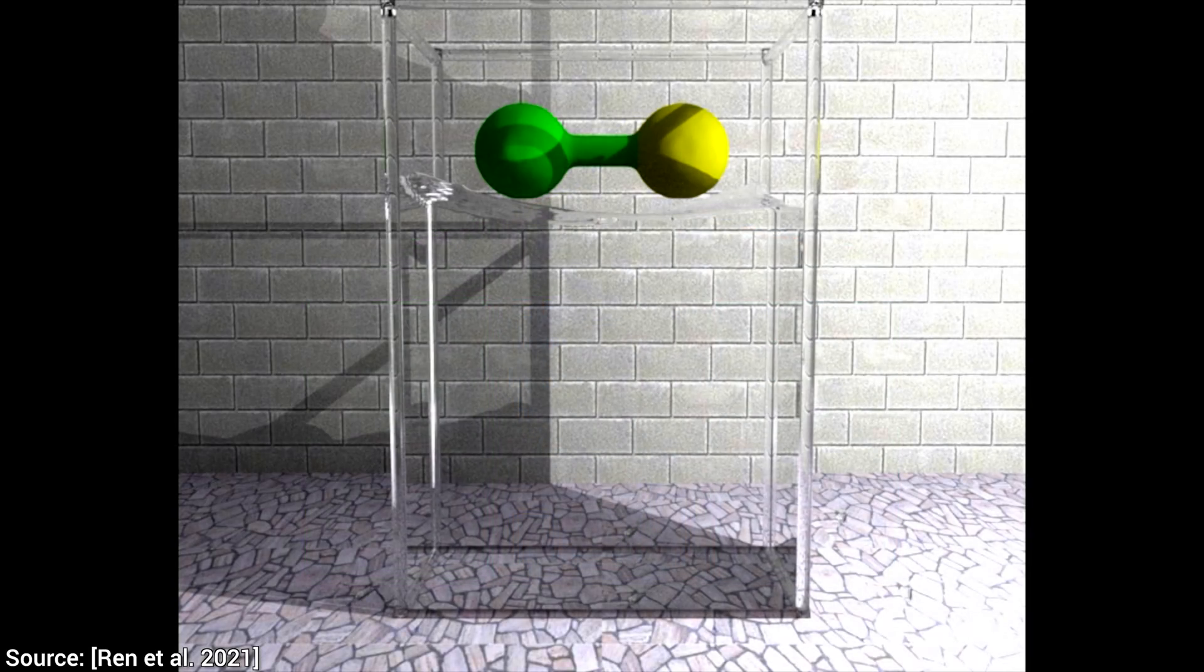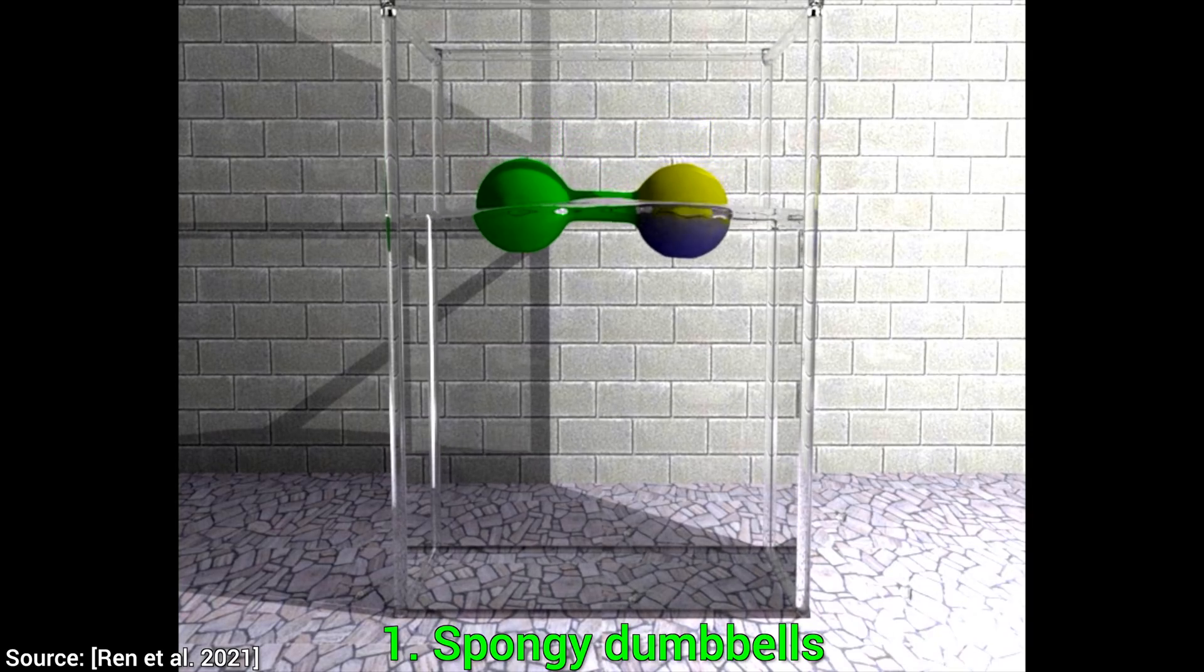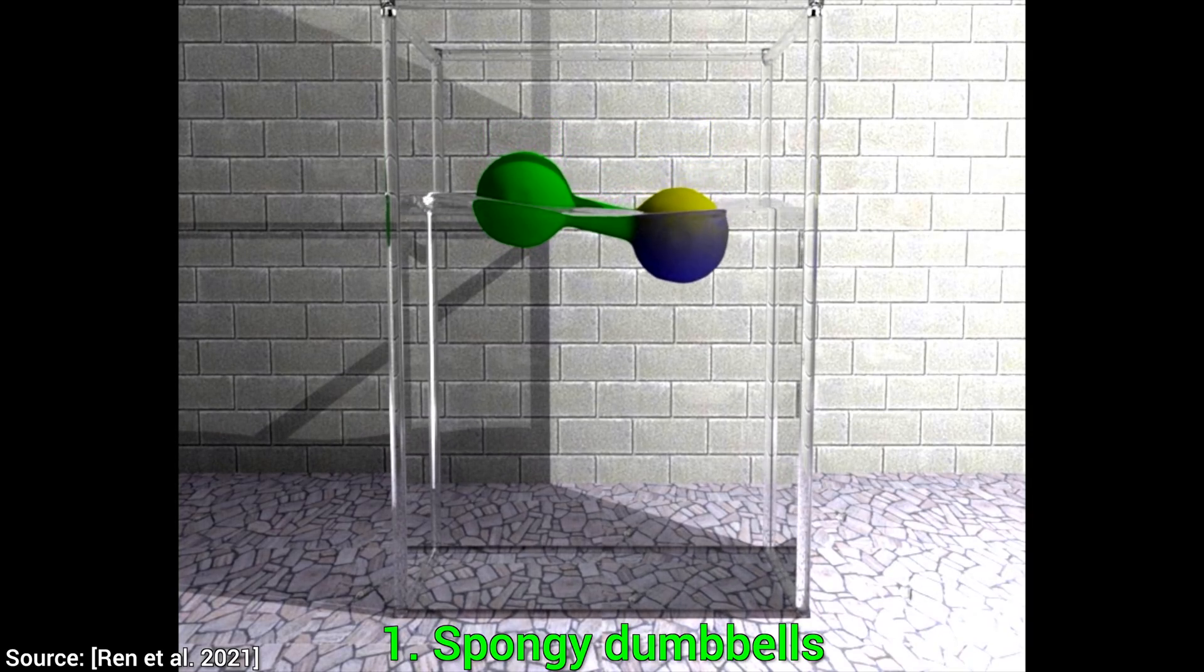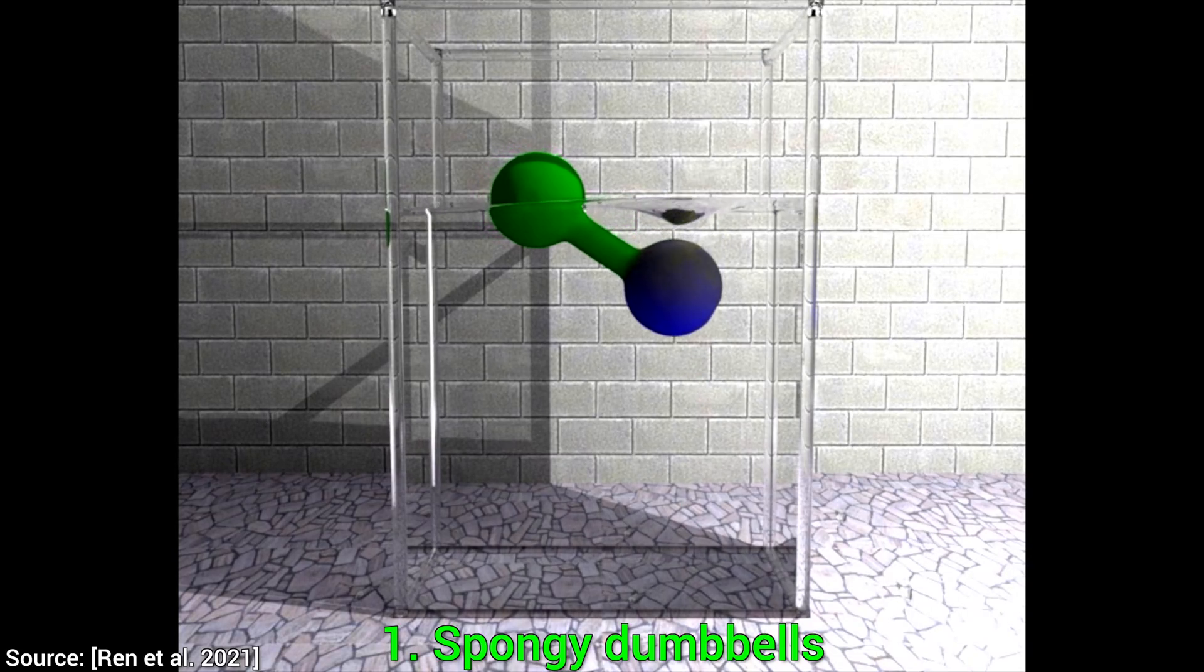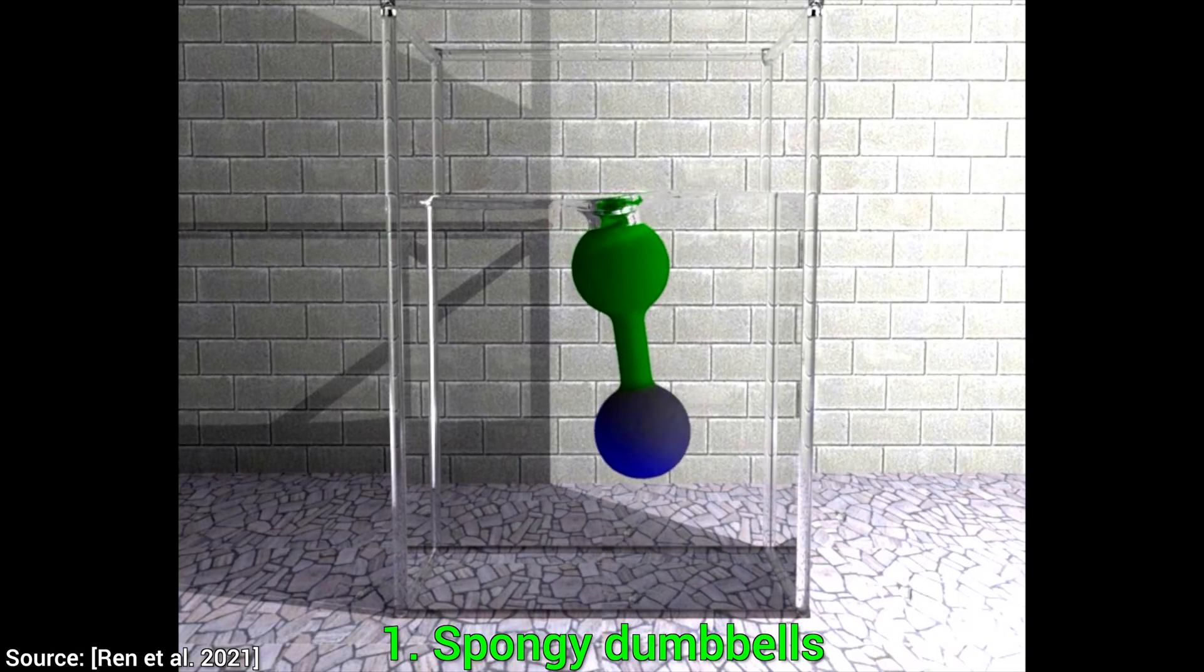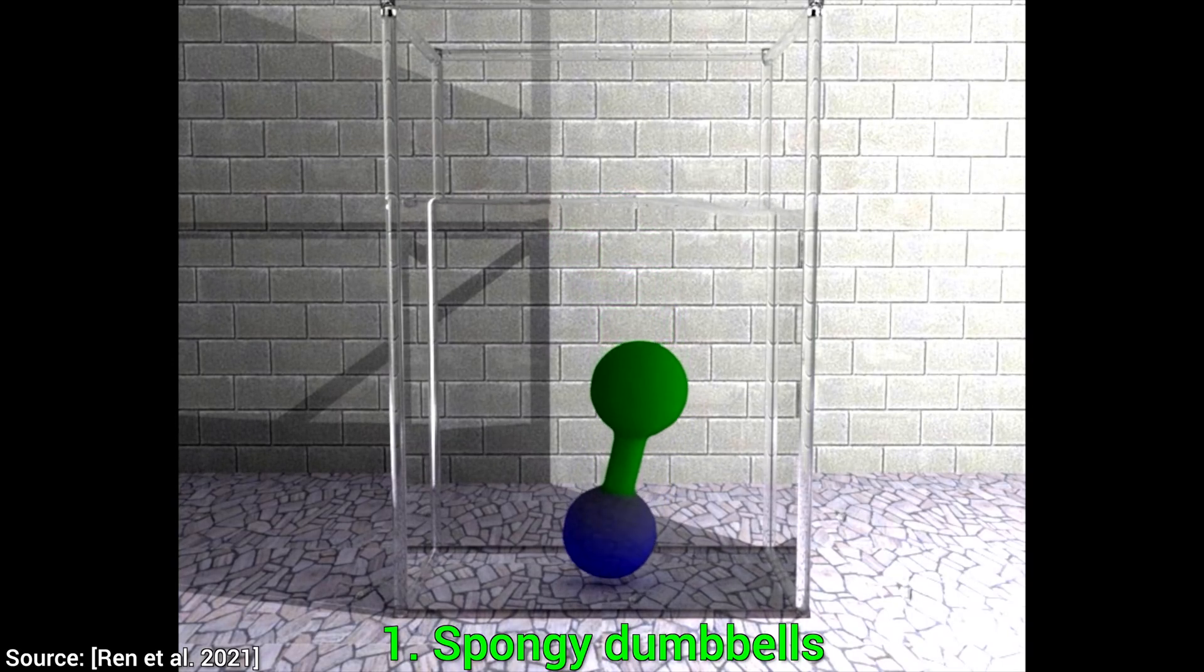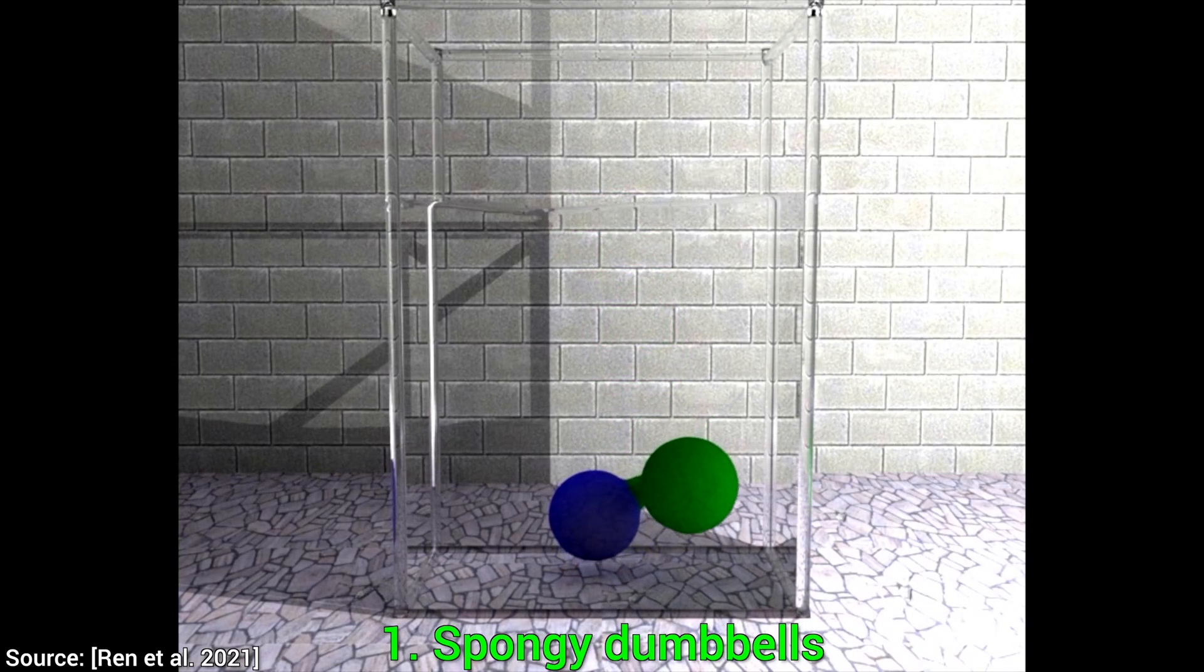Experiment number one. Spongey dumbbells. One side is made of a spongy material, and as it starts absorbing the water, let's see if it sinks. Well, it slowly starts to descend as it gets heavier, and then, it gets so heavy that eventually, it sinks the other half too. That is a good start.